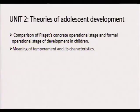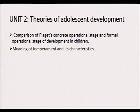Now we come to Unit 2, which looks at the theories of adolescent development. We are going to concentrate on the theory of Piaget. You will need to make a comparison of Piaget's concrete operational stage and the formal operational stage of development in children — discussing what happens in the concrete operational stage that does not happen in the formal operational stage, and vice versa.